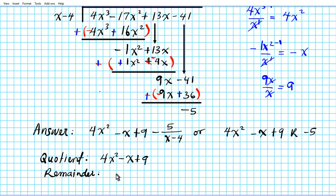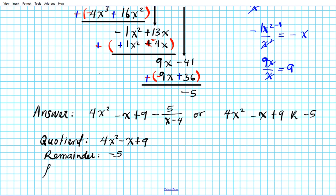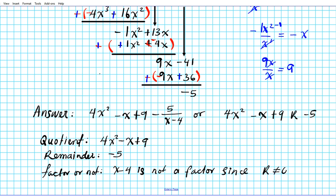Our remainder is negative 5. Now, is x minus 4 a factor of the dividend? The answer is no — x minus 4 is not a factor because the remainder is not zero.